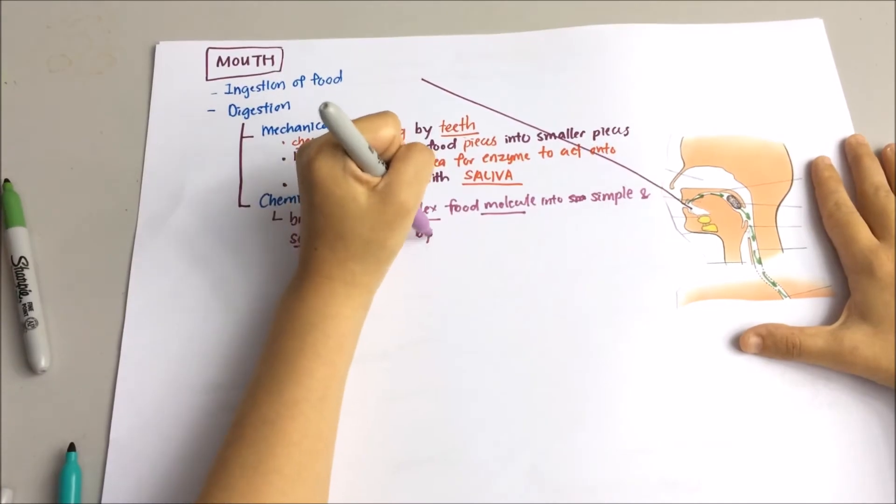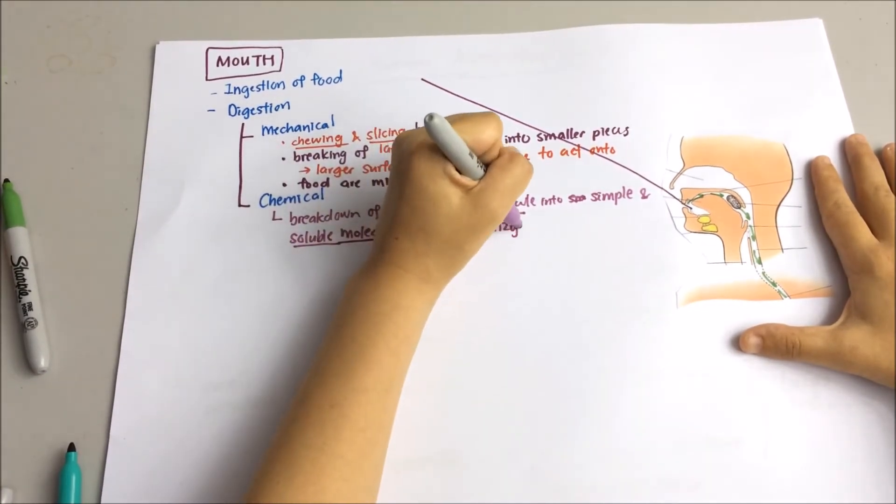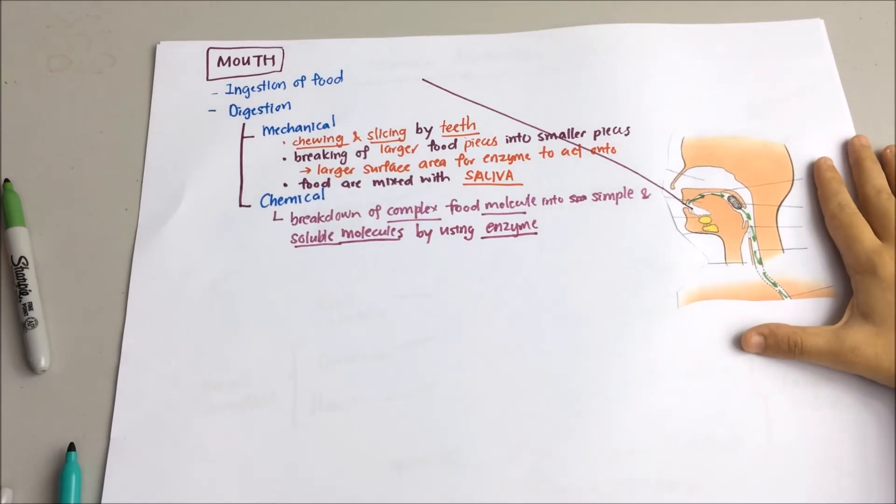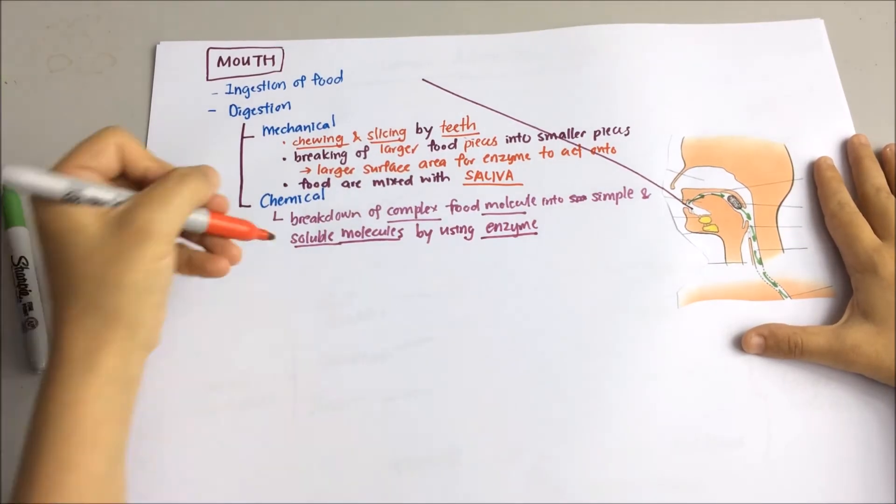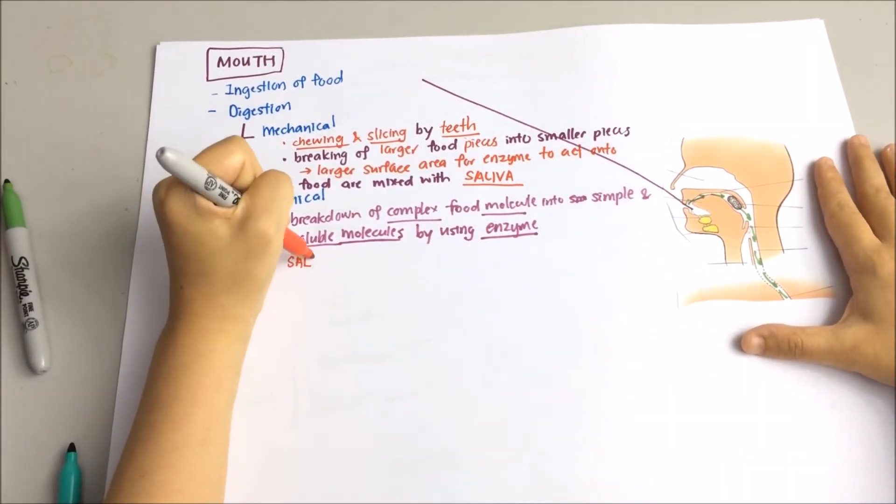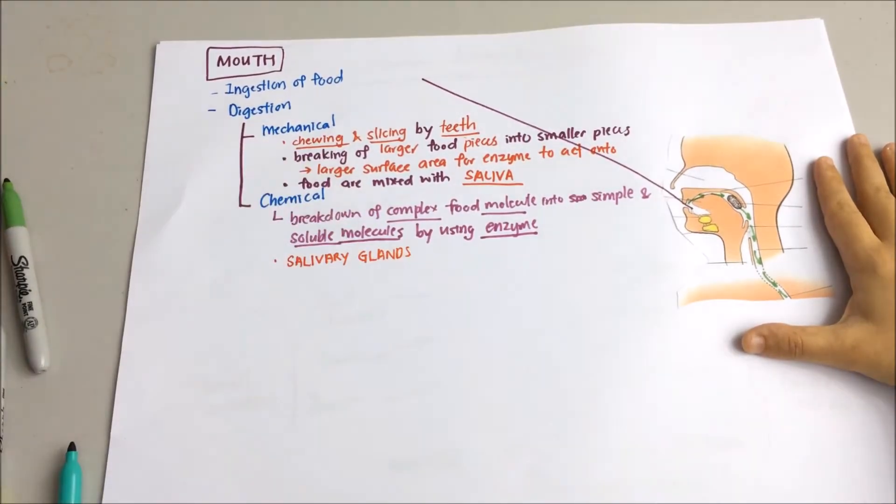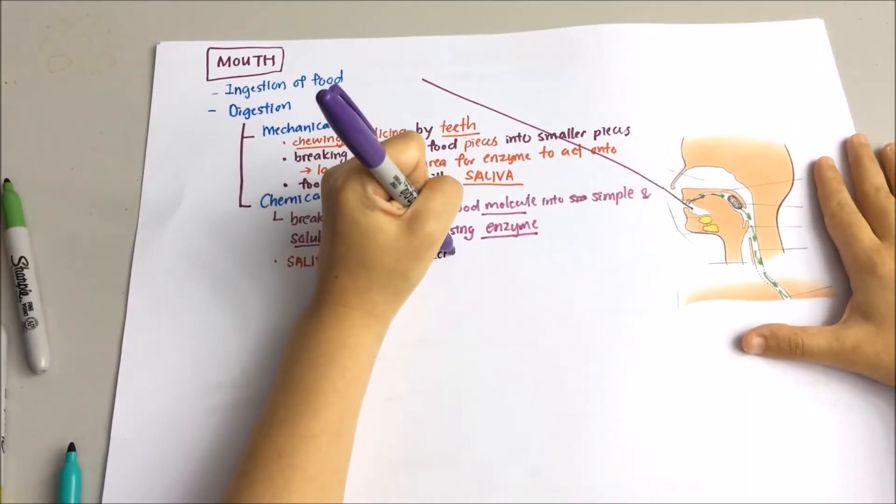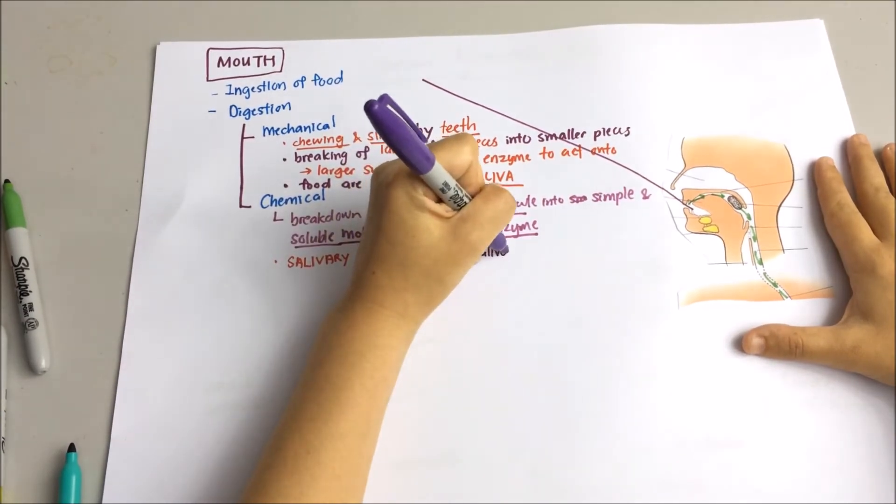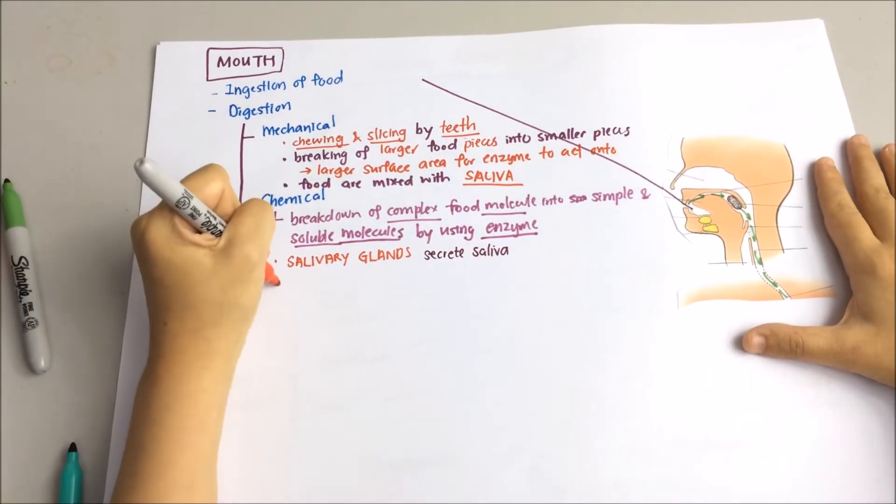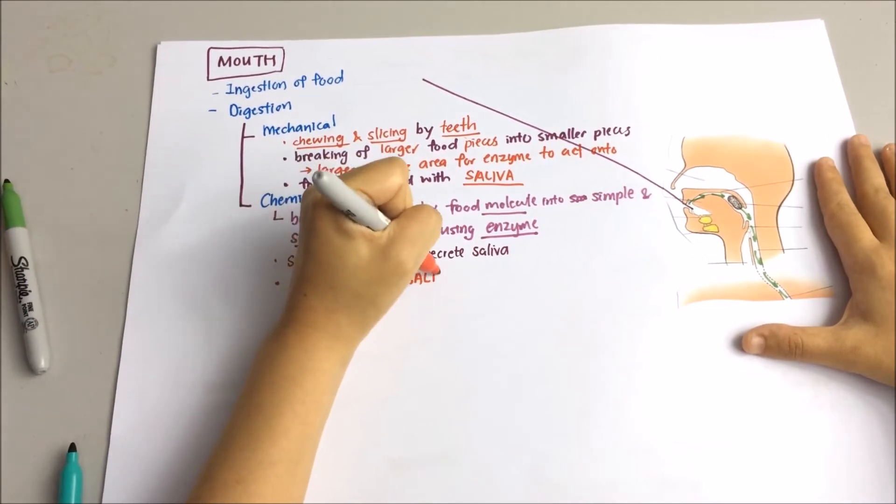Do you have any idea how you salivate just before you're about to eat something? That's actually the effect of your eyes or nose sensing something delicious. This will send the message to your brain telling that you're about to open your mouth and take a bite. And then your mouth will get ready by producing the saliva.